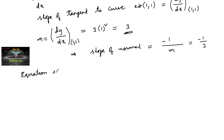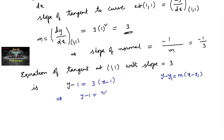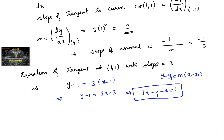Equation of the tangent at (1, 1) with slope 3: using the point-slope formula y - y₁ = m(x - x₁), we get y - 1 = 3(x - 1), which gives 3x - y - 2 = 0. This is the equation of the tangent.